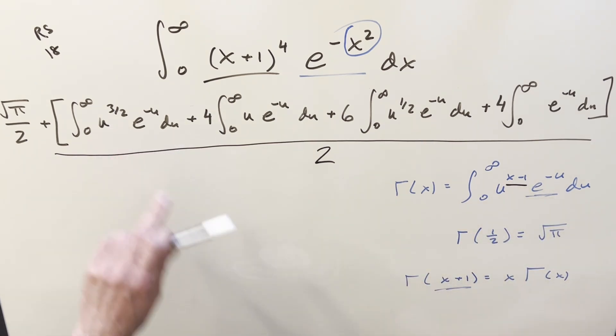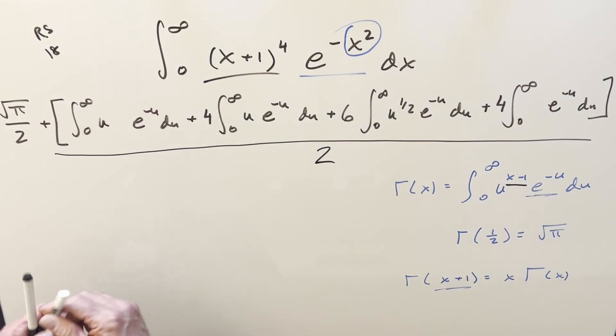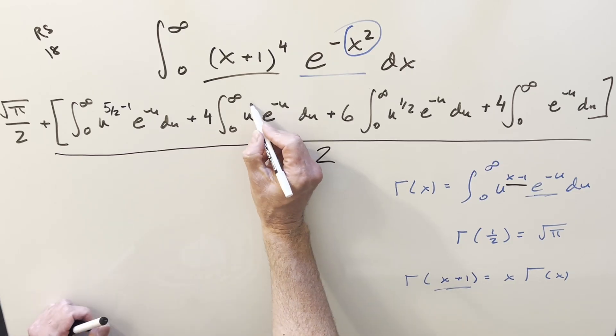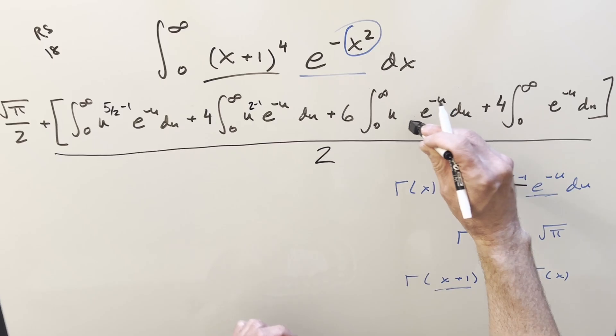So let me just adjust each of these exponents. So for like 3/2, I'll write that as 5/2 - 1. Then over here on u, like with a 1 exponent, I can write that as 2 - 1. Then 1/2 I can write as 3/2 - 1.